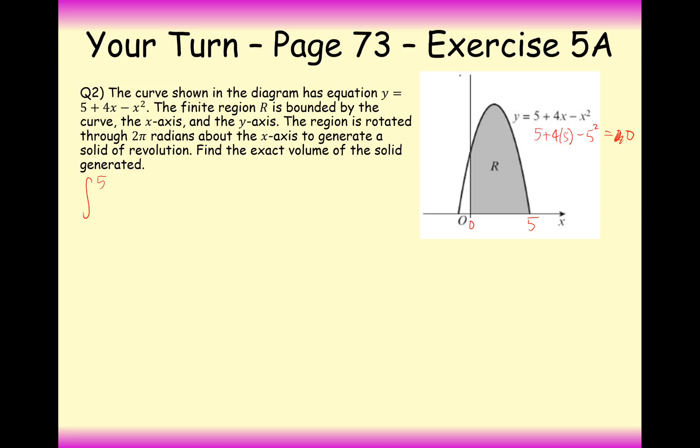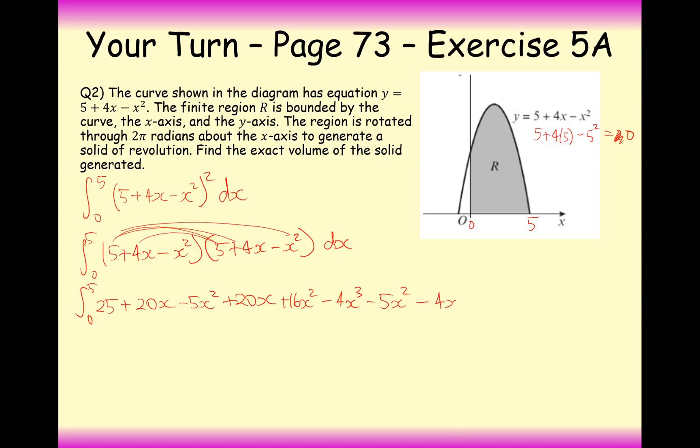OK, so what we need to do then is integrate between 5 down to 0, of (5 + 4x - x²)² dx. OK, so what is this when we expand the brackets? Well, let's write it all out. That's (5 + 4x - x²) times by (5 + 4x - x²) dx. OK, expand the brackets now and we'll get 25 plus 20x minus 5x². The next part, that's plus 20x. We're expecting 9 parts here, 3 by 3, obviously. It's plus 20x plus 16x² minus 4x³. And the last part, minus 5x² minus 4x³ and then plus x⁴ dx.